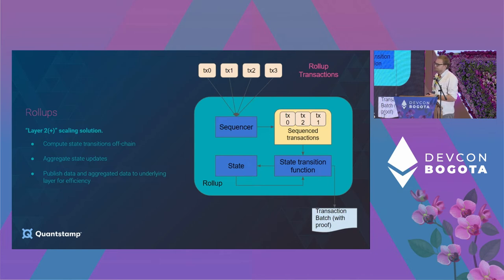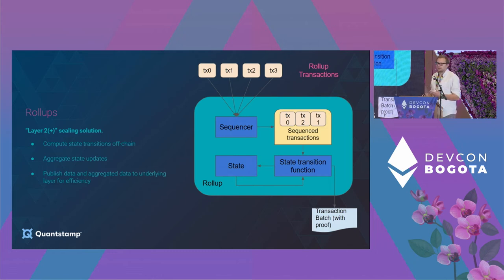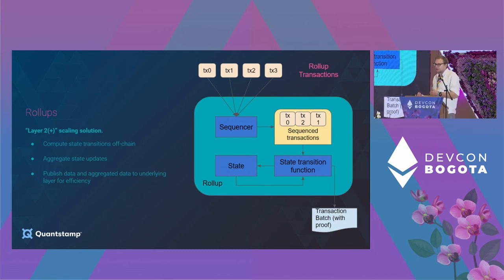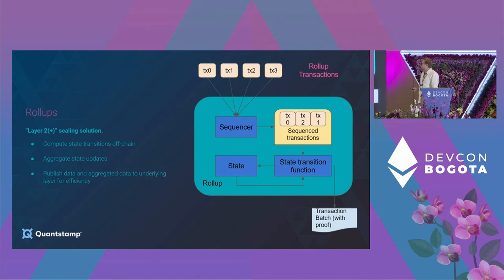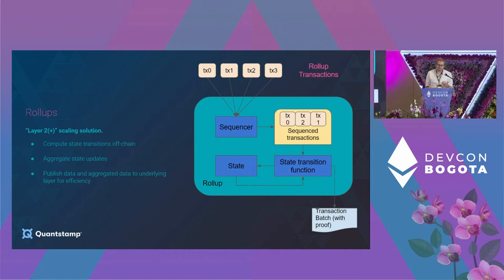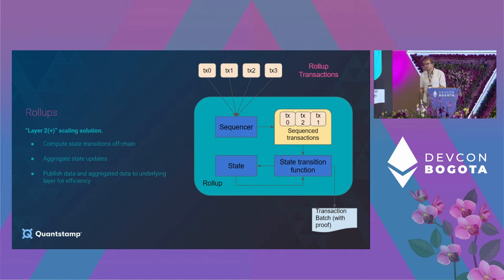So how does the system work? Usually you get some transactions, and then your system design is very dependent on the implementation. But typically there's something called the sequencer that gives an order to the transactions that are taken, and then this ordered set of transactions is executed in some state transition function, the state is updated, and something gets pushed to your layer 1 chain where it's eventually considered final.